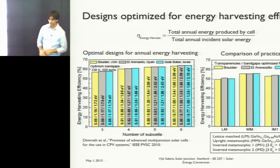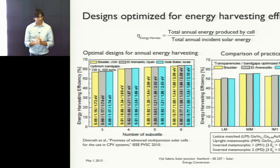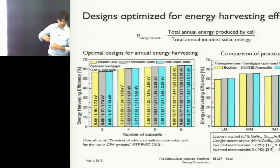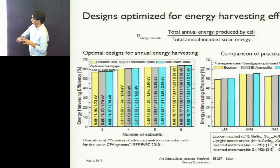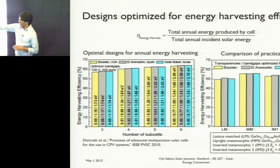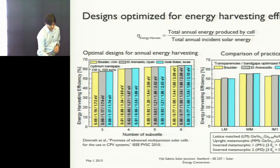You can design a certain set of band gaps to give you maximum energy yield throughout the year. A study done at Fraunhofer ISE looked at different technologies and showed that different band gap combinations and number of junctions can change your energy harvesting efficiency throughout the year.